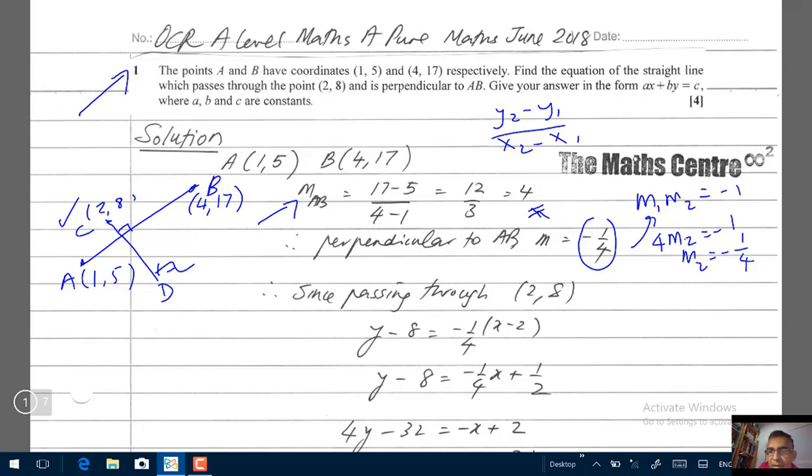So now we know the gradient of CD and we know the point C. We can write Y minus Y1 equals to M times X minus X1, the equation of a straight line. That's what you see here. Y minus 8 equals to minus 1 over 4 times X minus 2. Clean it up, you will get what you have here.